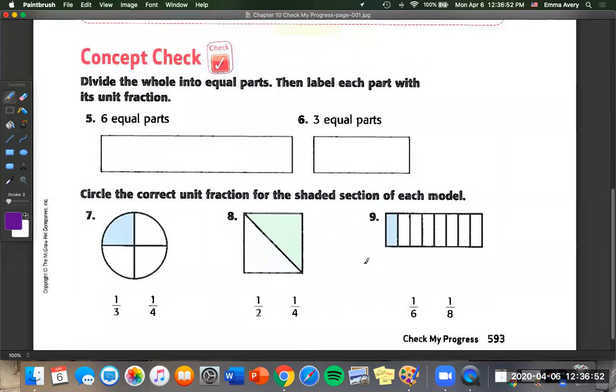On to number five. We're going to divide the whole into equal parts and then label each part with its unit fraction. So number five says six equal parts. We're going to go one, two, three, four, five, and six. And they want the unit fraction. So we know that's always going to have a one on top and our total number on the bottom. So it's going to be one sixth all the way across. And this way we can also check that we have six parts.